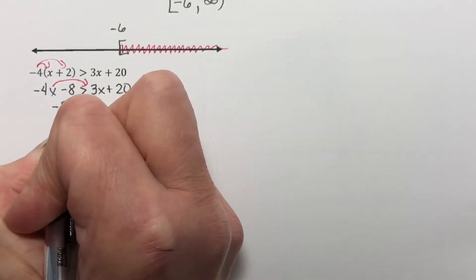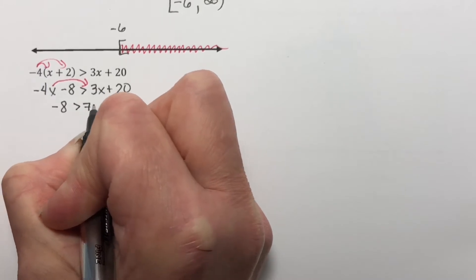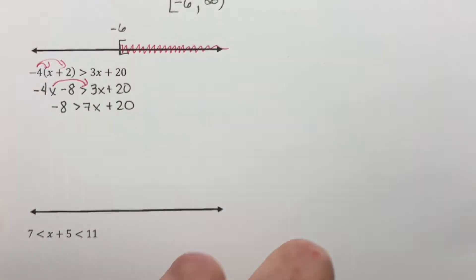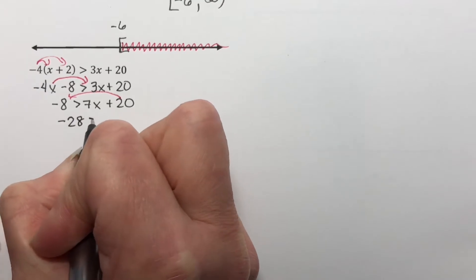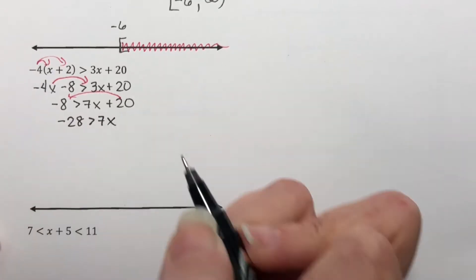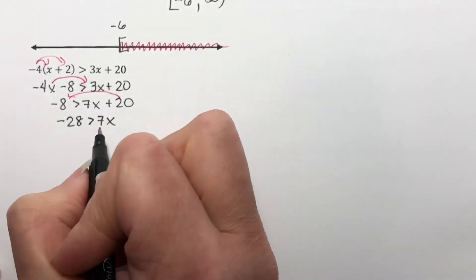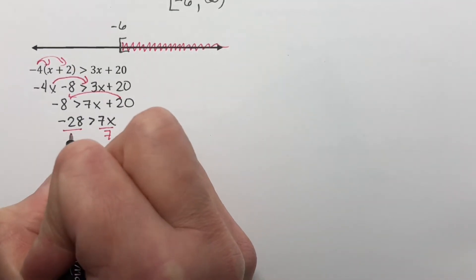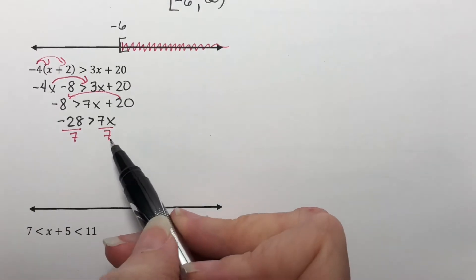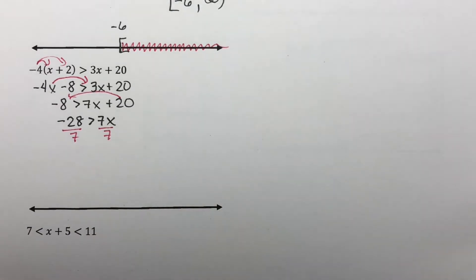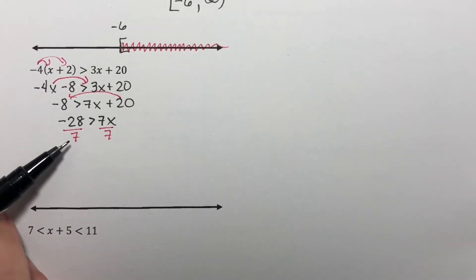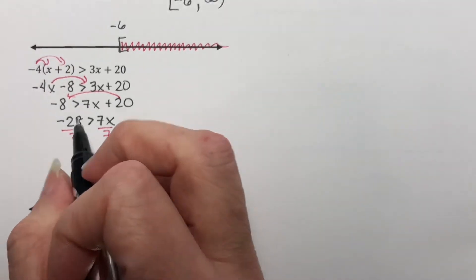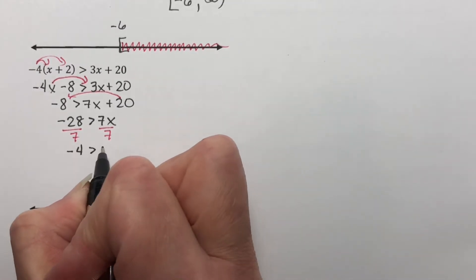So I have negative 8 is greater than 7x plus 20. Now I'll move the 20 over here, which gives me negative 28 is greater than 7x. Now I need to divide both sides by 7. I do not have to flip the sign because 7 is a positive number. It does not matter whatsoever that this is a negative number — only that the number we're dividing by is positive. So this gives me negative 4 is greater than x.